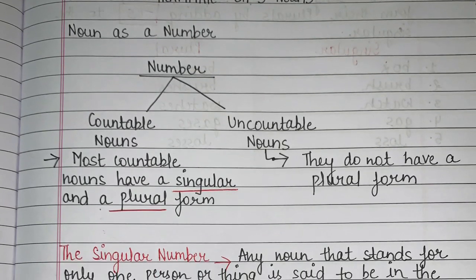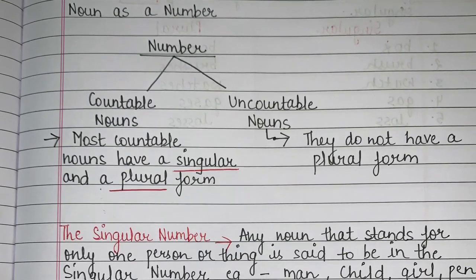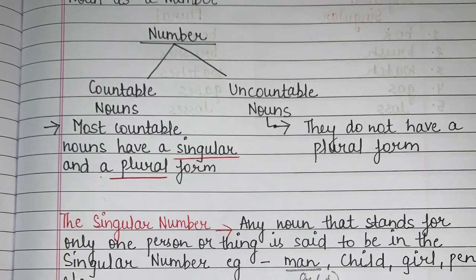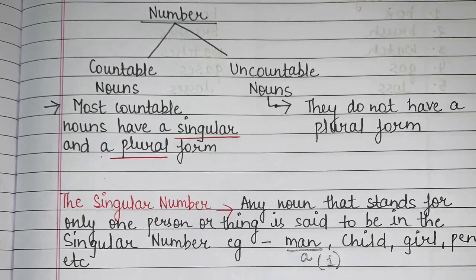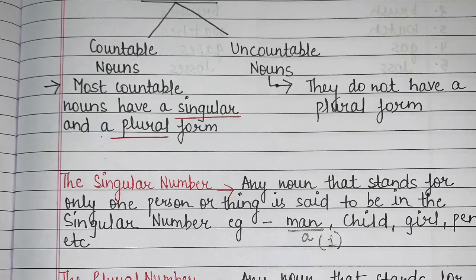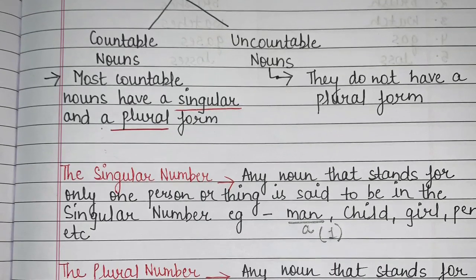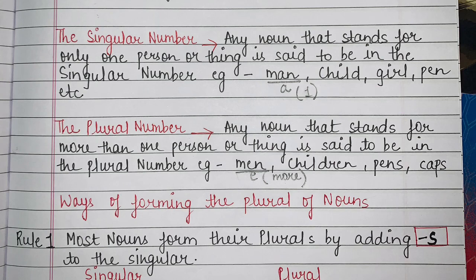Today we will study about different forms of these nouns. When we talk about countable nouns, most countable nouns have a singular and a plural form. In your recent classes you have already studied singular and plural forms. In uncountable nouns we do not have any plural form — we only have a singular form. So let's try to understand what we mean by singular number.